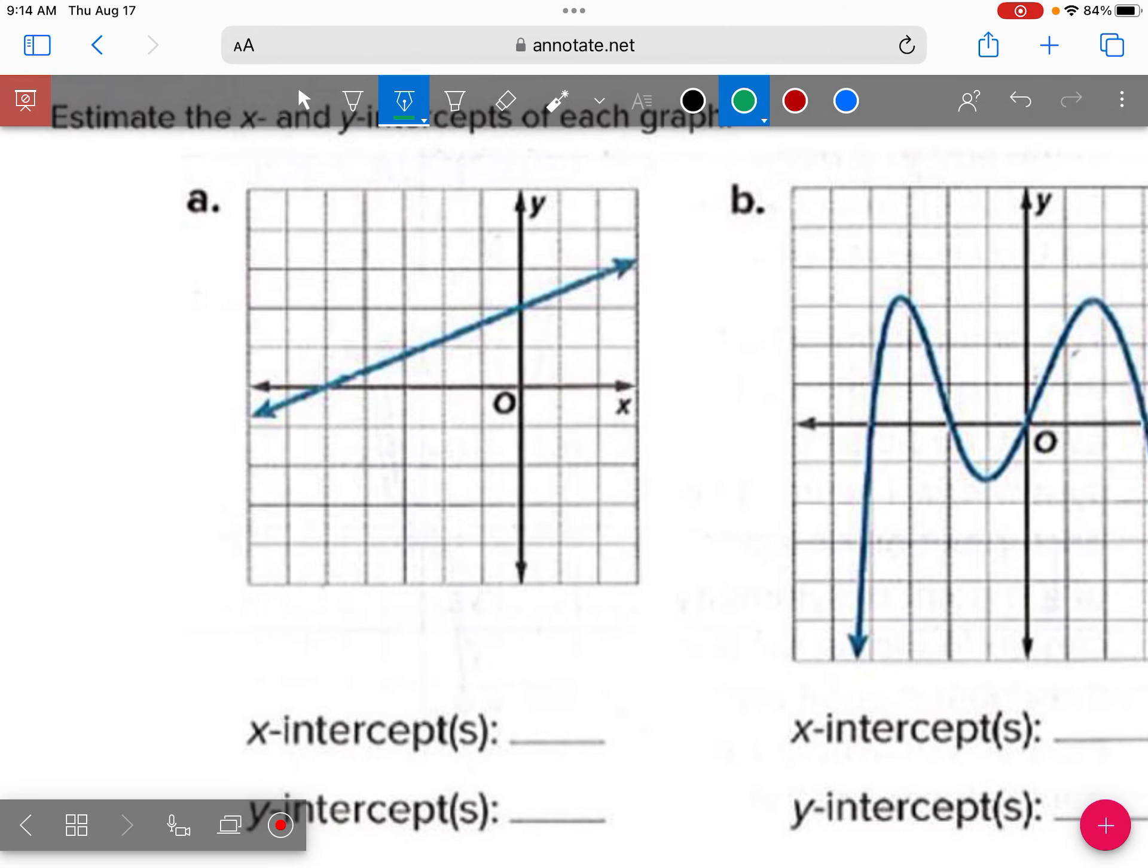I'm going to pass out homework two today. And part of homework two is estimating intercepts. So this graph has one x-intercept and one y-intercept. So see if you can figure out where those are located. This is our last question.